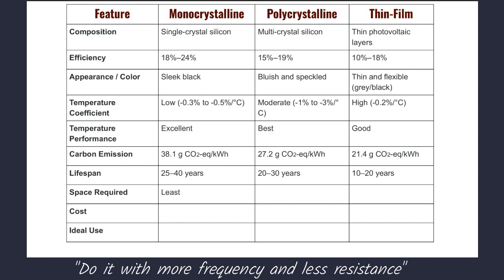The next feature is space required. Mono-crystalline solar panels require very little space. Poly-crystalline requires more space than Mono-crystalline. Thin-Film panels require the most space, more than both Mono-crystalline and Poly-crystalline.